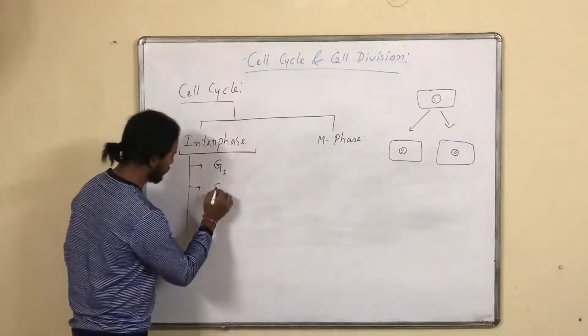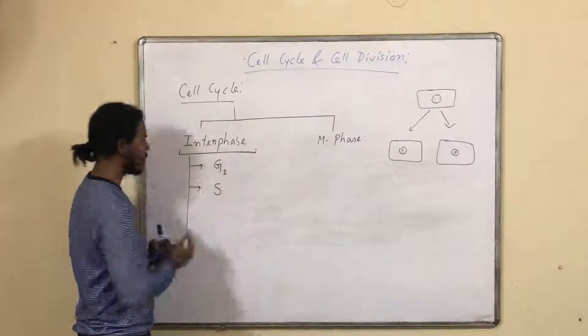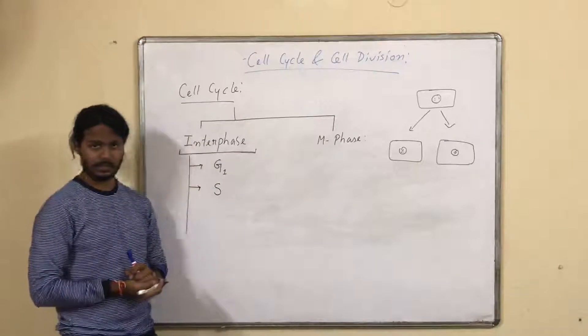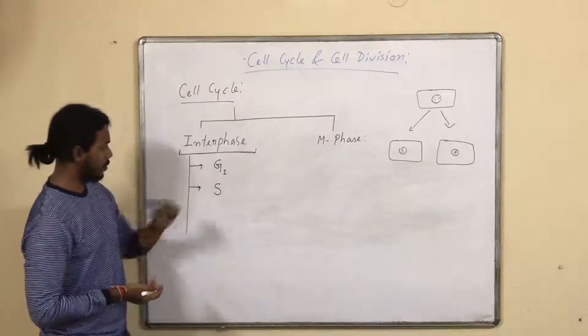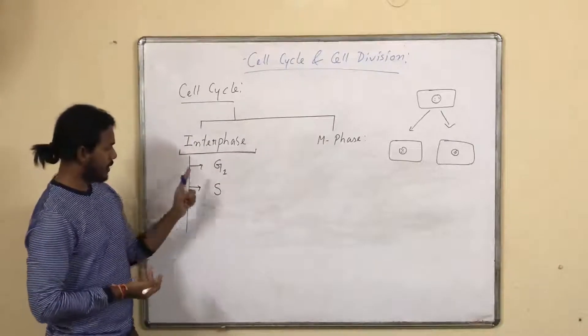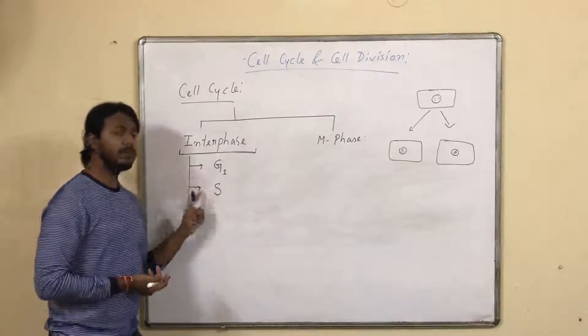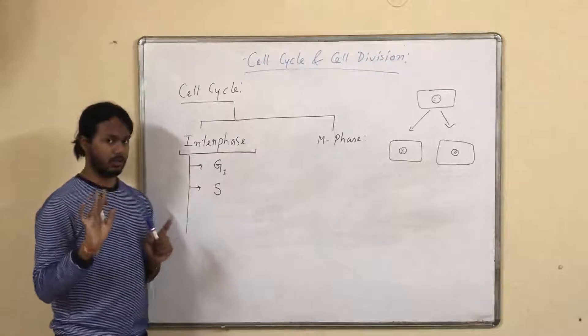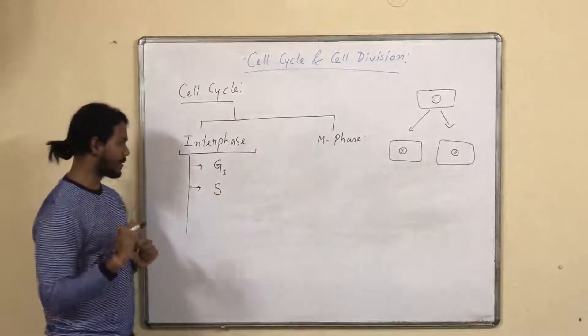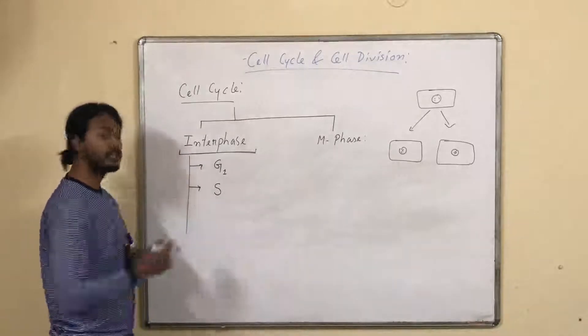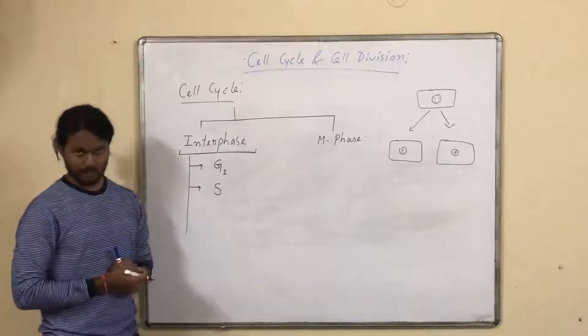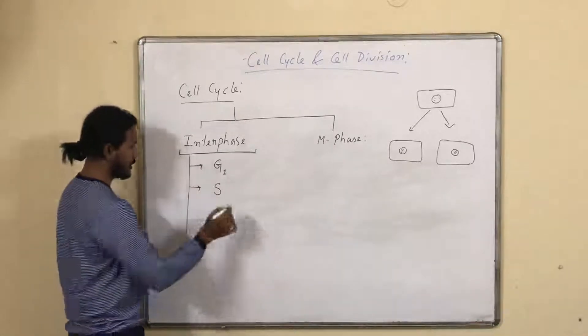This G1 phase is also called the centauric phase. Most of the time it is an additional phase — once G1 is complete, the cell may enter the next stage.